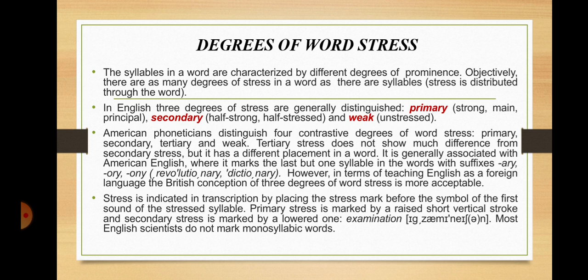Now we'll discuss degrees of word stress. The syllables in a word are characterized by different degrees of prominence. Objectively, there are as many degrees of stress in a word as there are syllables. In English, three degrees of stress are generally distinguished: primary (or strong, main, principal), secondary (half-strong or half-stressed), and weak (unstressed). American phoneticians distinguish four contrastive degrees: primary, secondary, tertiary, and weak. Tertiary stress does not show much difference from secondary stress, but it has a different placement in the word. It is generally associated with American English, where it marks the last but one syllable in words with suffixes.